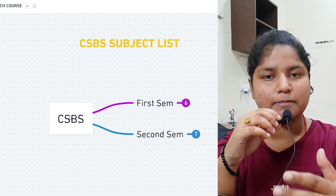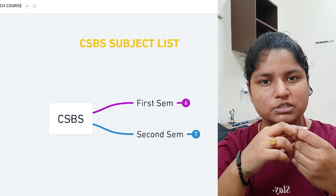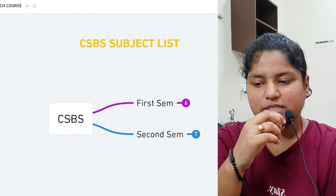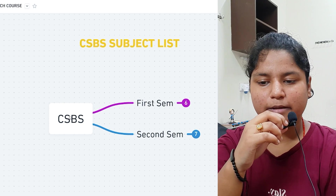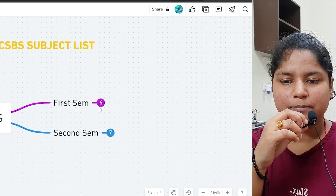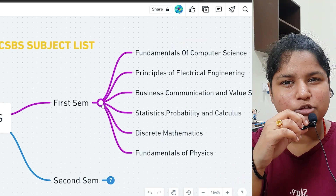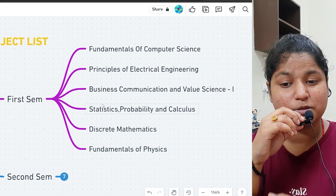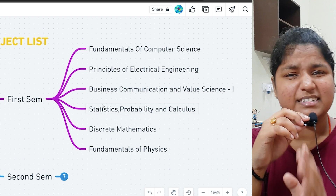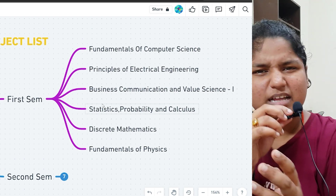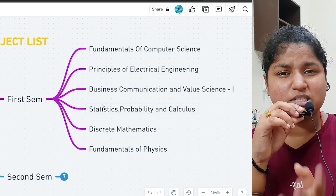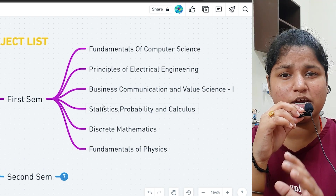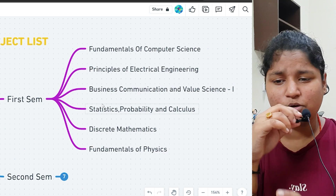These are the subjects that are very basic in your first year — kind of related to computer science. In first semester, subjects include fundamentals of computer science. Then coming to principles of electrical energy, which is basically an electrical course. Even if you're from CSE, you have to complete courses related to electrical.